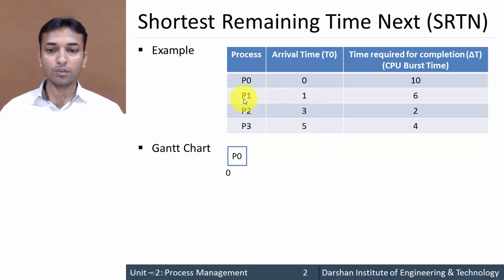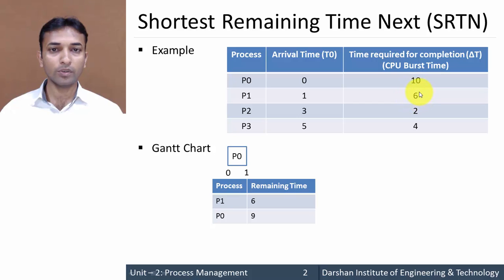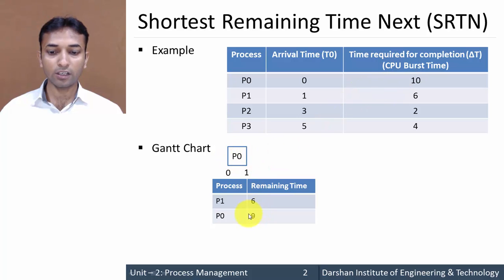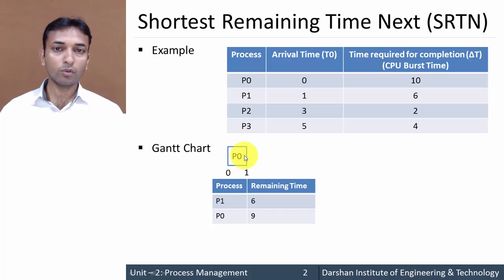At one millisecond, a new process P1 arrives. P0 has been executing up to one millisecond. Now there are two processes in the queue: P0 and P1. P1 is a new process requiring six milliseconds to complete. P0 originally requires ten milliseconds but one millisecond has already executed, so nine milliseconds remain. Comparing six and nine, six is less — the shortest — so the next turn is for process P1. P0 is forcefully suspended and the processor is allocated to P1.